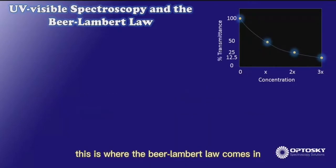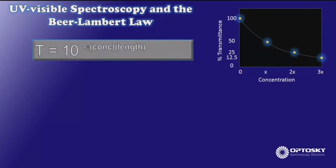This is where the Beer-Lambert law comes in. You'll notice that right now I have an exponential relationship between my percent transmittance and my concentration. We can see that in the equation here, where the concentration is a term up here in the exponent.